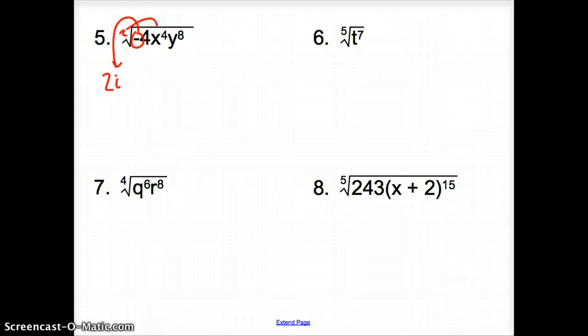This 2 goes to that exponent of 4. So it's going to be x, 4 divided by 2 is 2. Y to the what? 8 divided by 2 is 4. So it's 2i x squared y to the 4th for our answer.